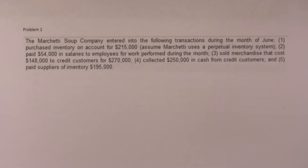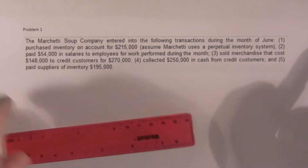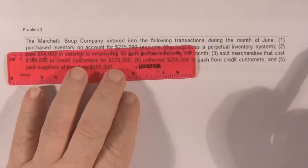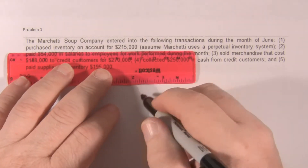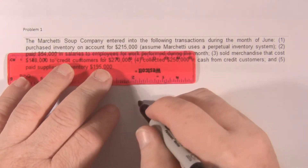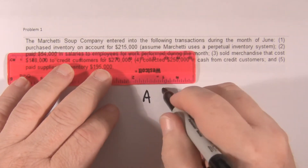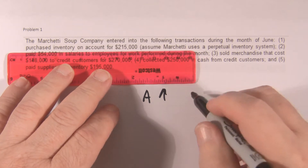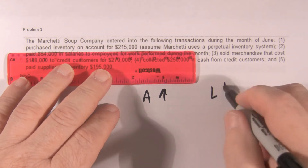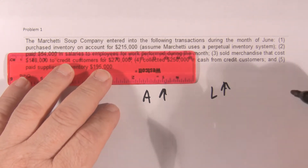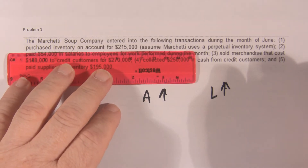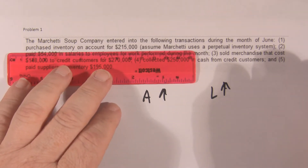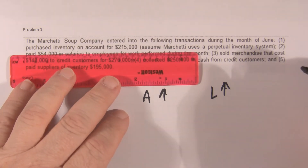The first transaction they tell us about was they purchased inventory on account. So assets go up, liabilities go up, and the company is worth the same amount of money — there's no change to the value of the company.